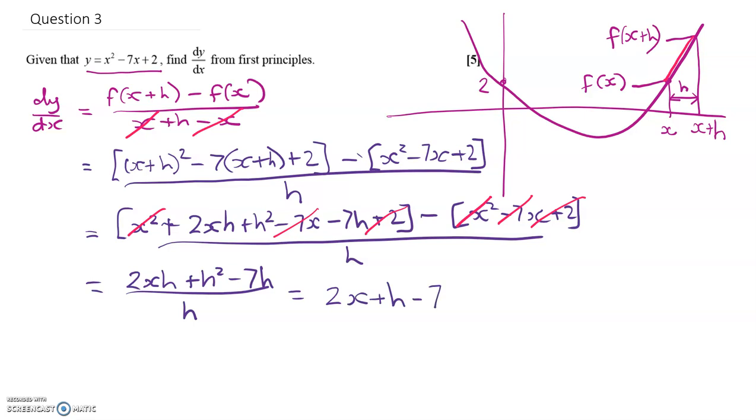Right, now we said we were going to make h very, very small. So if I do that, if I say the limit of that expression as h tends to 0, means that this h will disappear because it becomes so tiny and so negligible that I can ignore it. And I'm left with 2x minus 7. So that's the answer.